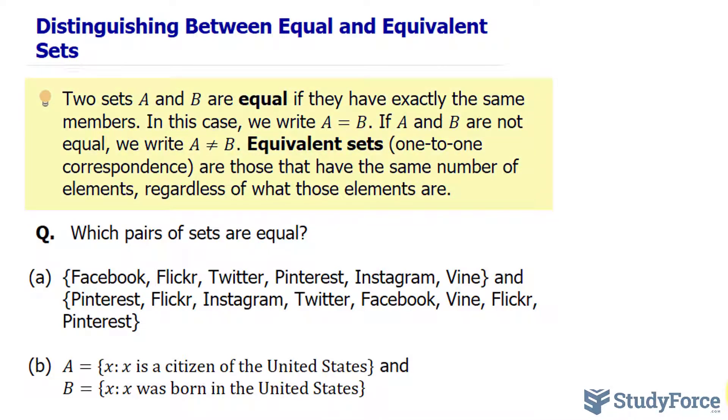Two sets, A and B, are equal if they have exactly the same members. In this case, we write A is equal to B.